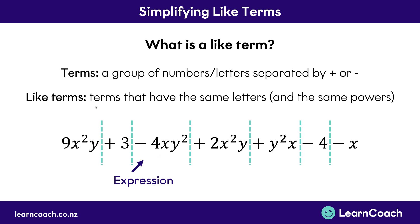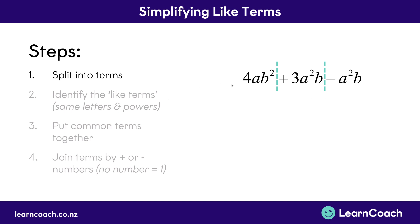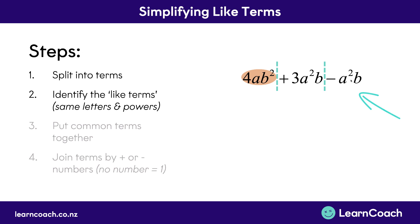So we're going to look at the steps to simplify like terms. Your first step is to split the expression into its terms by drawing a line before any pluses and minuses. The second step is to identify which terms are like. We go to the first term — it has an a and a b squared — and check if any other terms have that. This one doesn't, neither does the last one, so it has no like terms. The next term has an a squared and a b, and the final one also has an a squared and a b — so these two are like terms.